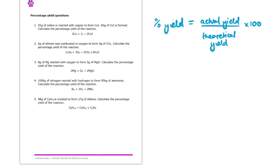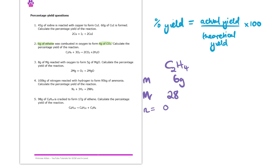Here we're told that we have 6 grams of ethene that was combusted in oxygen to form 4 grams of carbon dioxide. We know we started with 6 grams of ethene, and we need to work out theoretically how many moles of carbon dioxide we would make if all of it got converted. So if we work out for the ethene how many moles we have: the mass was 6 grams, the MR is 28 (because 2 times 12 of the carbon plus 4 times 1 of the hydrogen). That gives 0.214 moles of ethene.